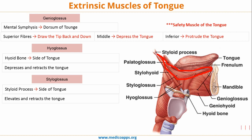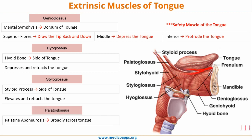Last, we have the palatoglossus. Palatoglossus originates from the palatine aponeurosis and attaches broadly across the tongue. Its main action, because it is situated superior to the tongue, is to elevate the posterior aspect of the tongue. These are the four extrinsic muscles of the tongue. The most important MCQ point is that genioglossus is called the safety muscle of the tongue.